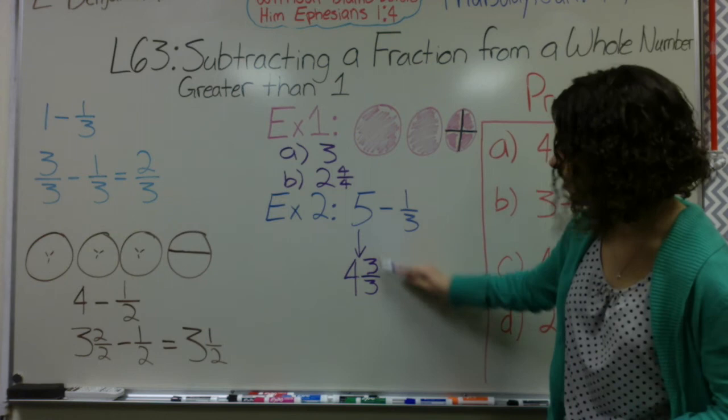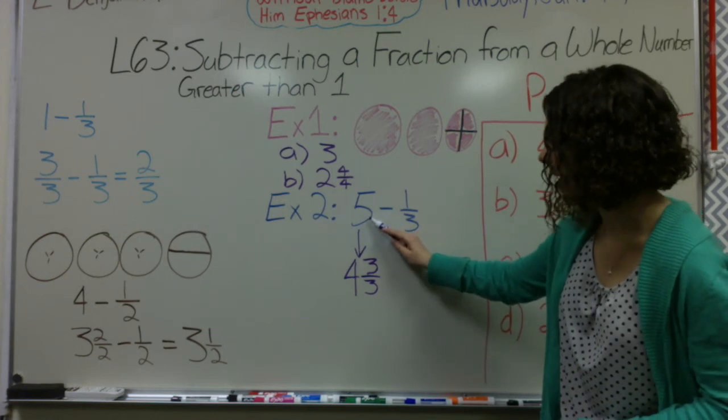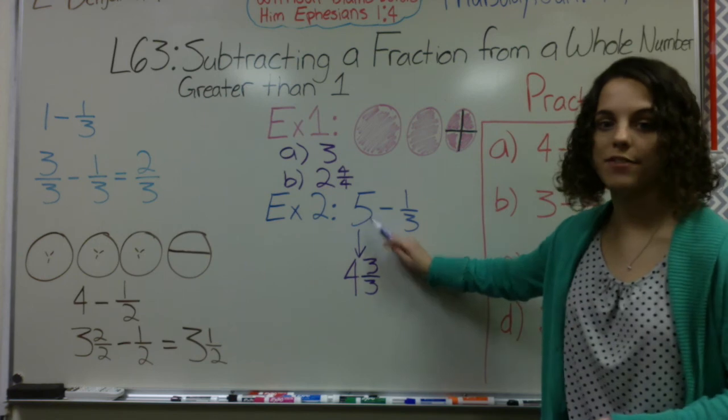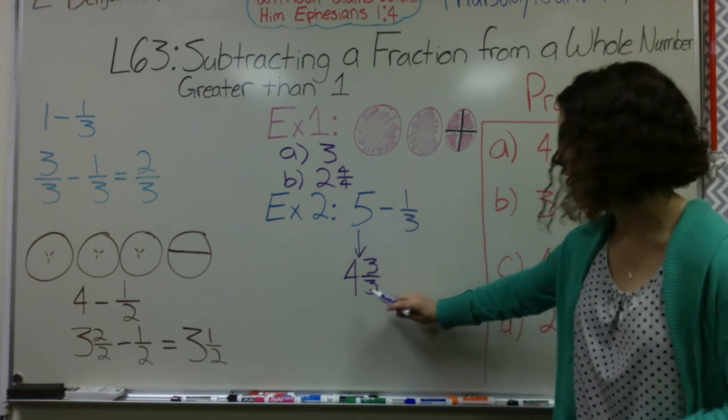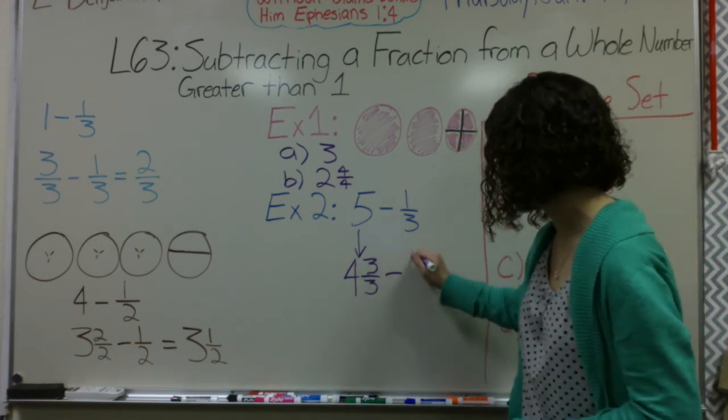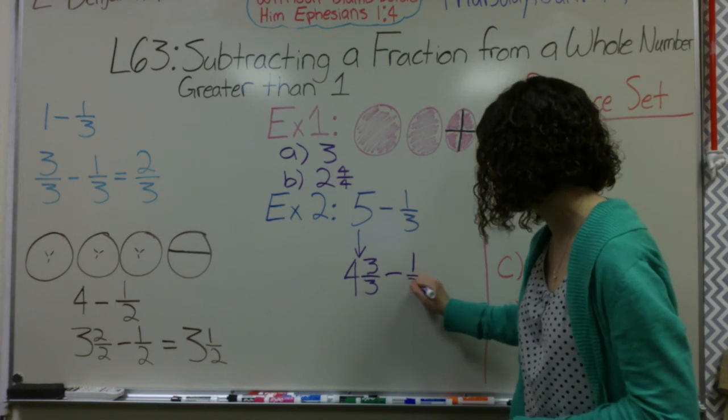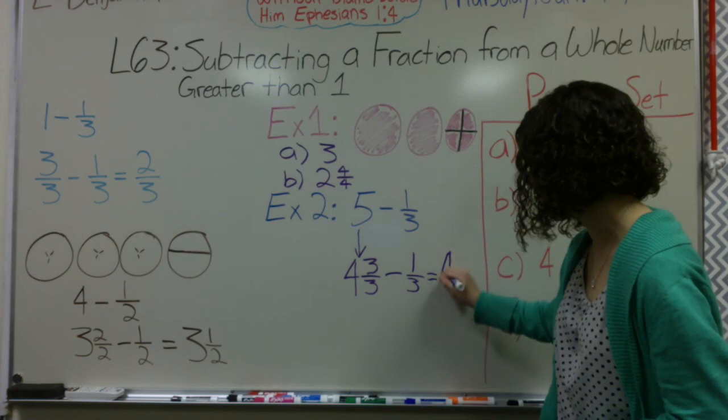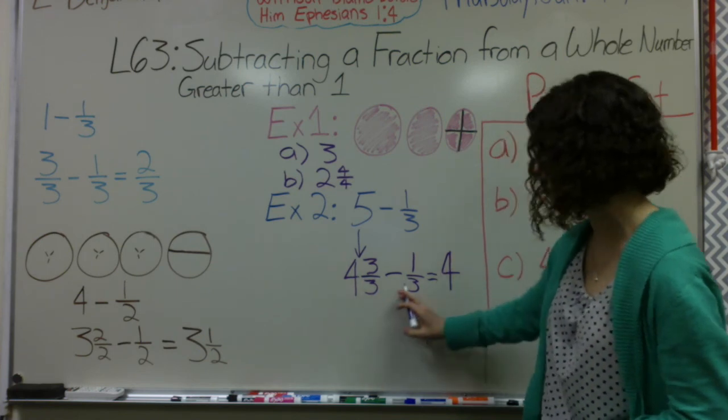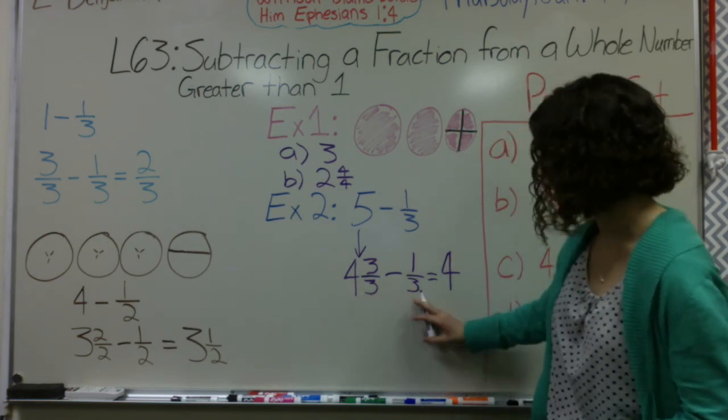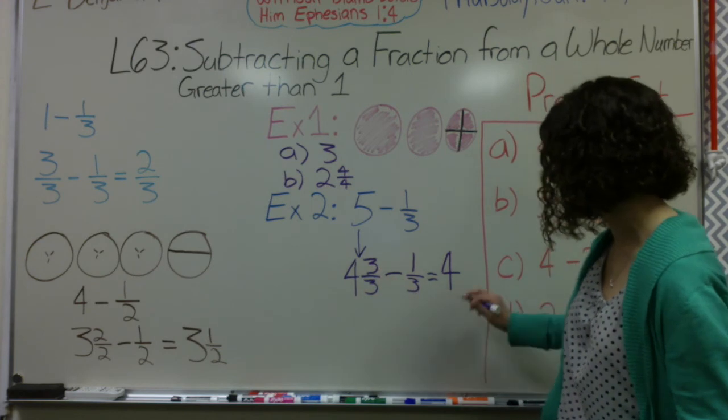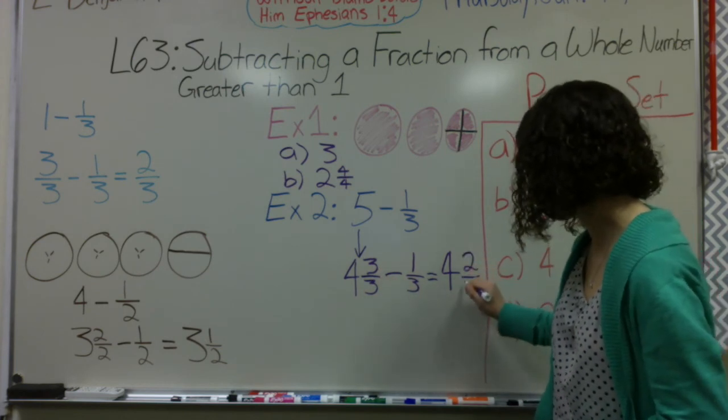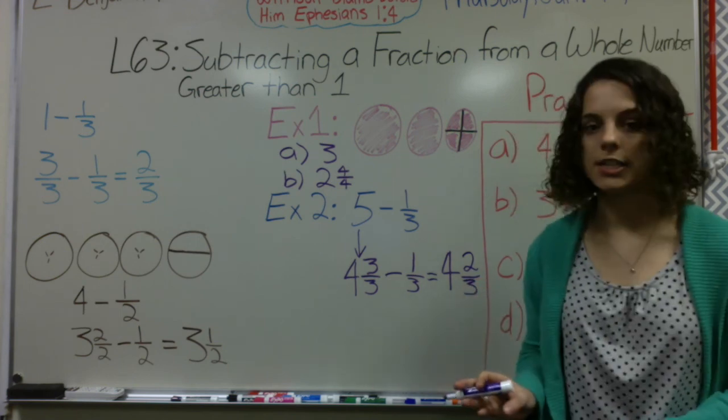Notice how both of these are the exact same thing. 5 is the same, or 4 and 3 thirds is equal to 5. I'm simply rewriting it so that I can subtract. 4 and 3 thirds minus 1 third equals 4. Remember subtract whole number from whole number and I don't have a whole number here. And I subtract a fraction from a fraction. So 3 thirds minus 1 third is indeed 2 thirds. So 4 and 2 thirds would be my final answer.